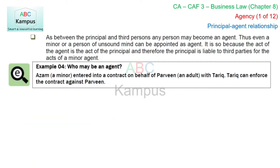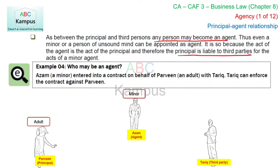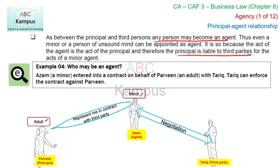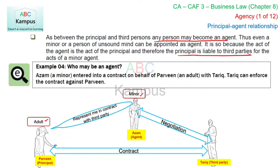As between the principal and third persons, any person may become an agent — thus even a minor or a person of unsound mind can be appointed as agent. This is because the act of the agent is the act of the principal, and therefore the principal is liable to third parties. Since a minor or person of unsound mind cannot be personally liable, the principal is personally liable to third parties for the acts of such an agent. So if the principal is an adult and the agent is a minor, the third party's contract will still be with the principal, not with the minor agent.